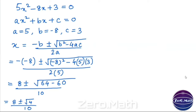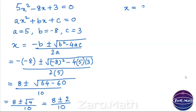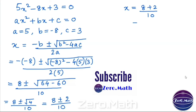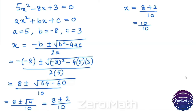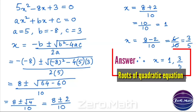Now, as we know the value of root 4 is 2, so putting that value: 8 plus or minus 2, divided by 10. We are having two values with two different signs. Taking the positive value first: x equals 8 plus 2 divided by 10, which is 10 over 10, that becomes 1. Now taking the negative sign: x equals 8 minus 2 divided by 10, which is 6 over 10, that simplifies to 3 over 5. Therefore, x equals 1 and x equals 3/5 are the two solutions of this quadratic equation.